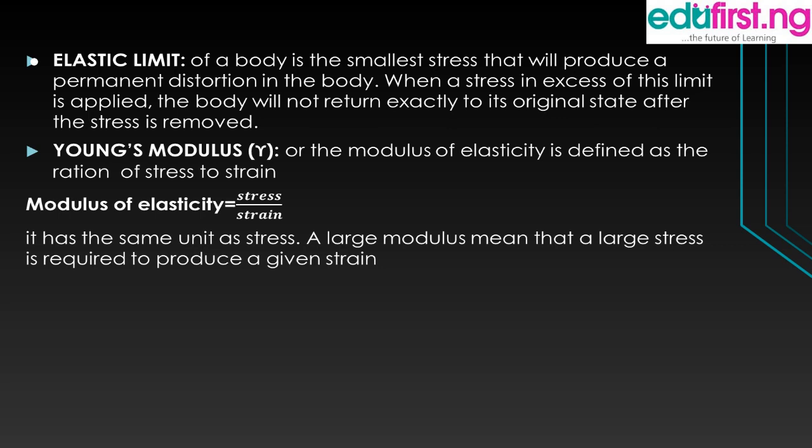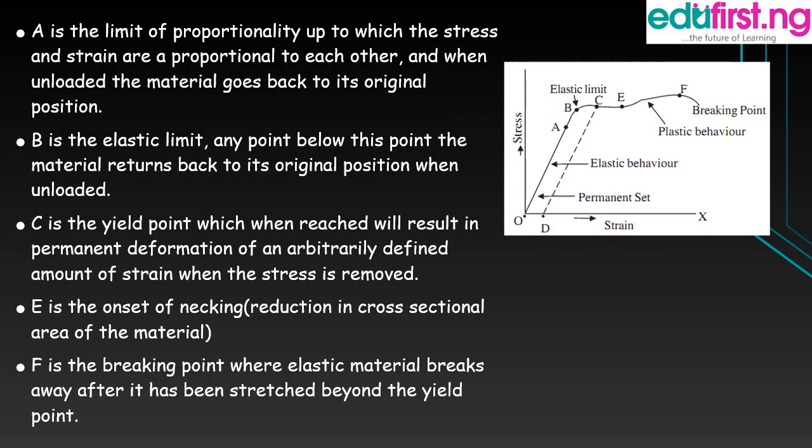If you check this diagram, the graph is plotted with stress against strain, and it explains when a body undergoes deformation. On this graph we have five points: point A, point B, point C, point E, and point F. Point A is the limit of proportionality, up to which stress and strain are proportional to each other. Point B is the elastic limit — at any point below point B, the body will be able to return back to the original position, but any point above the elastic limit, the body will not be able to return to its original position.